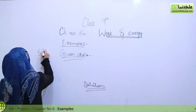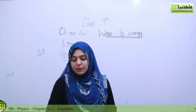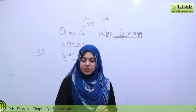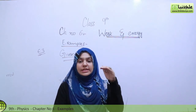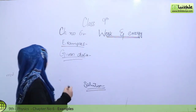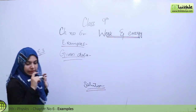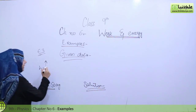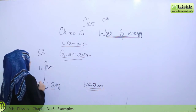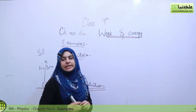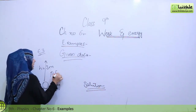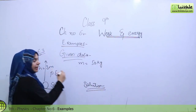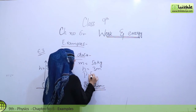Example 6.3: A body of mass 50 kg is raised to a height of 3 meters. What is its potential energy? We have a ball with mass 50 kg. It was on the ground and is raised to a height of 3 meters. When a body is taken to a height, it gains potential energy, which we have to find out. Given: mass equals 50 kg, height equals 3 meters. Find: potential energy.